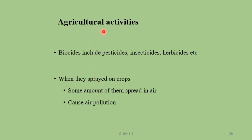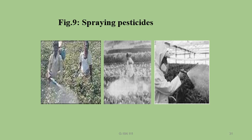Agricultural activities: pesticides, insecticides, and herbicides are used in agriculture. Some of these poisonous chemicals spread into the atmosphere, causing air pollution. Spraying of pesticides on crops also causes air pollution.